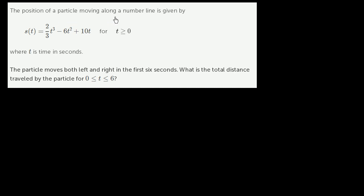The position of a particle moving along a number line is given by s(t) = (2/3)t³ - 6t² + 10t, for t ≥ 0, where t is time in seconds. The particle moves both left and right in the first six seconds. What is the total distance traveled by the particle for 0 ≤ t ≤ 6?